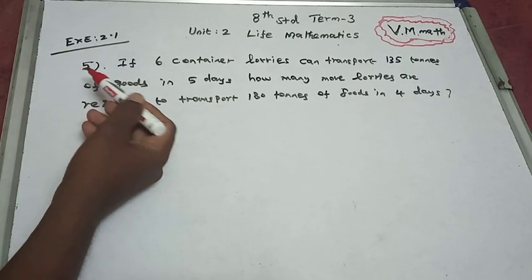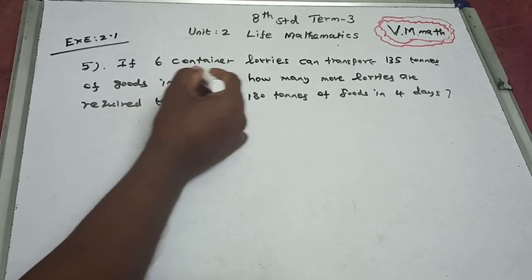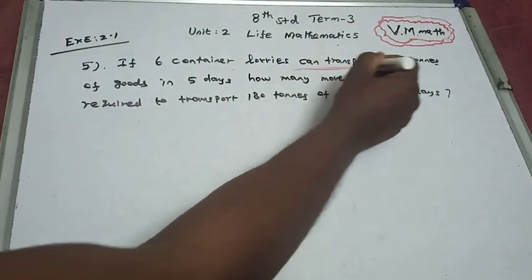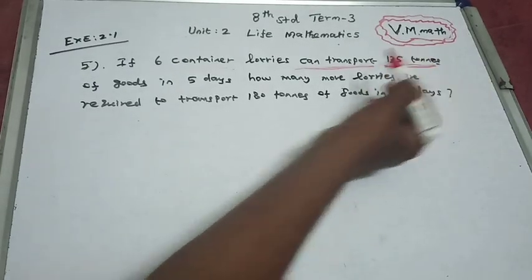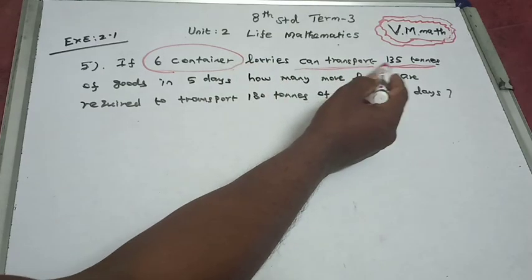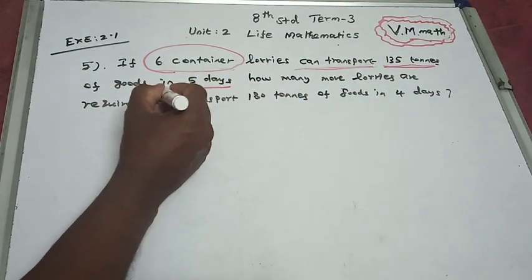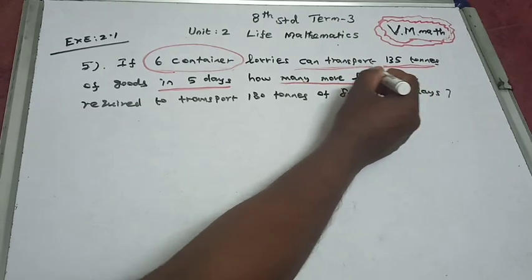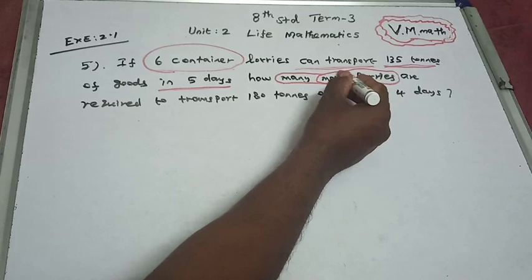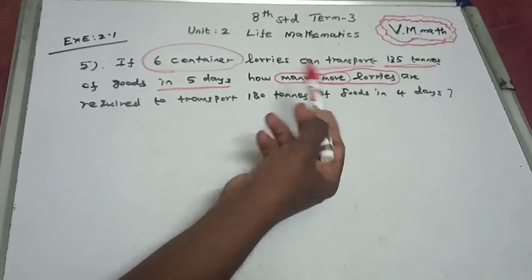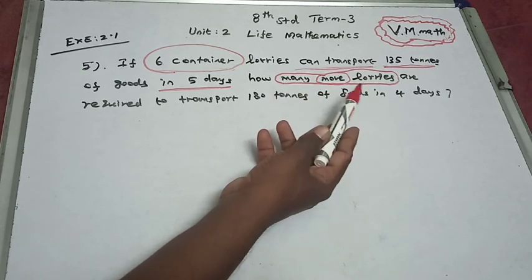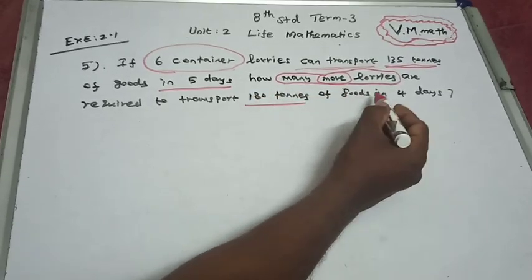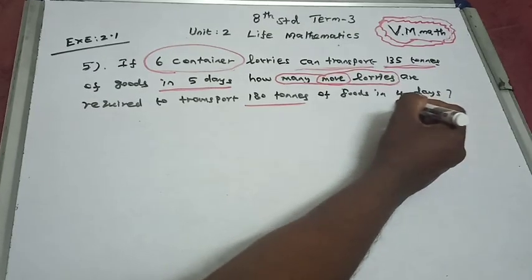Exercise 2.1, question number 5. If 6 container lorries can transport 135 tons of goods in 5 days, how many more lorries are required to transport 180 tons in 4 days?